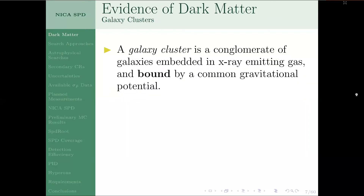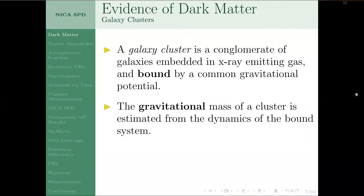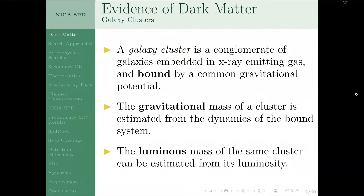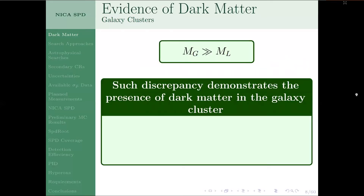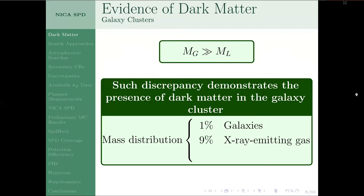The second piece of evidence has to do with galaxy clusters — bound systems of a conglomerate of galaxies. We can use the virial theorem to calculate the gravitational mass of a galaxy cluster, and on the other hand use the luminosity of each galaxy to estimate a luminous mass. What we found is that the gravitational mass is much larger than its luminous mass. The breakdown is: only 1% is made up of optically observable galaxies, 9% is X-ray emitting gas, but 90% we can't account for — that's what dark matter makes up.